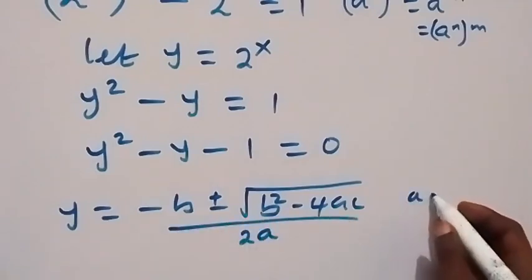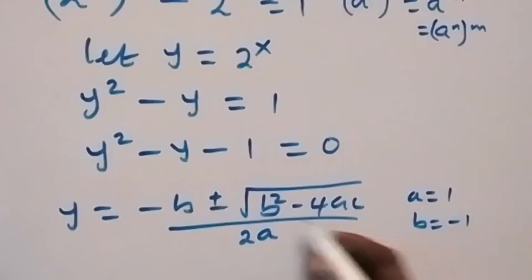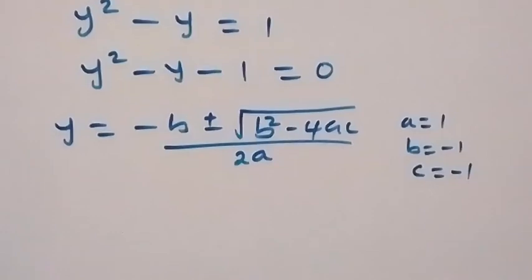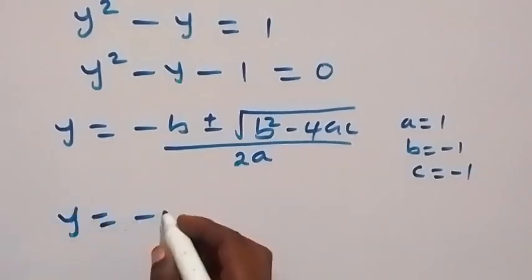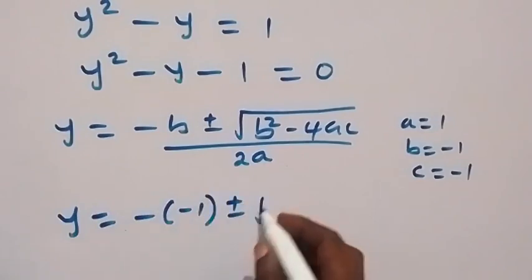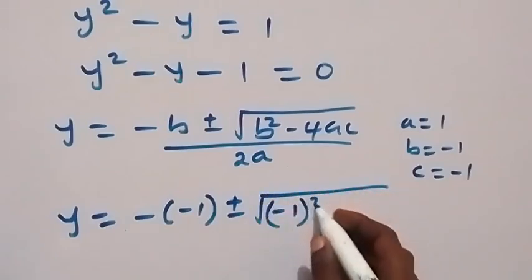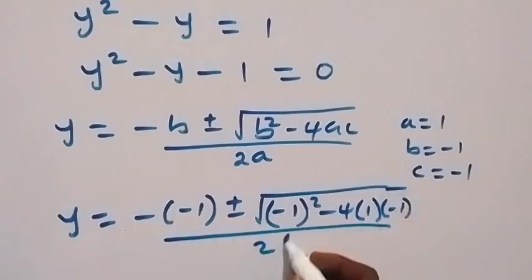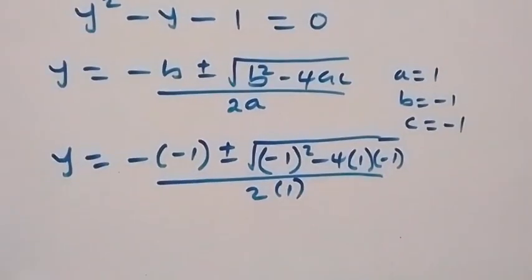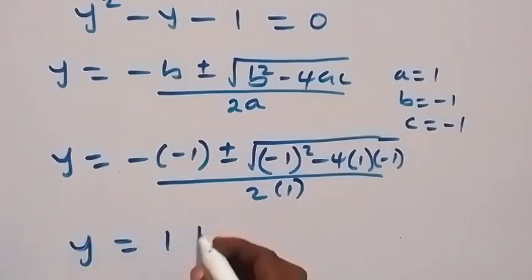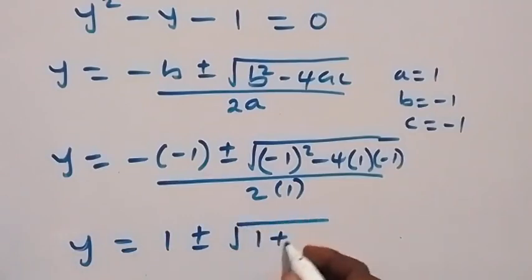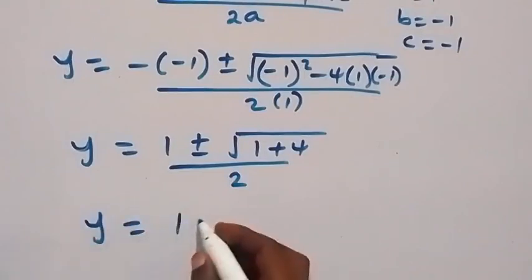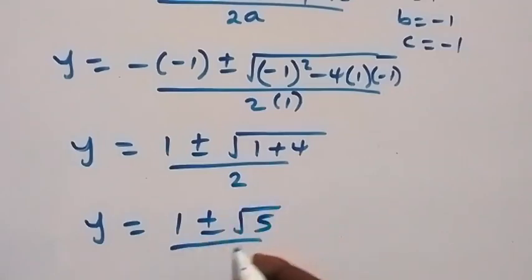Here, a in this case is 1. b is minus 1, the coefficient of y. And c is the constant, which is minus 1. So we substitute, and this becomes y equals to minus minus 1 plus or minus square root of minus 1 squared minus 4 times 1 times minus 1. Then we have y equals to 1 plus or minus square root of 1 plus 4, over 2. What we have becomes y equals to 1 plus or minus root 5, over 2.